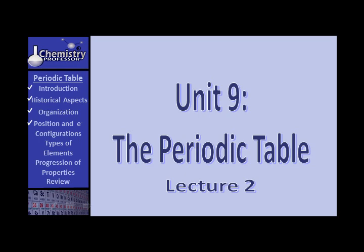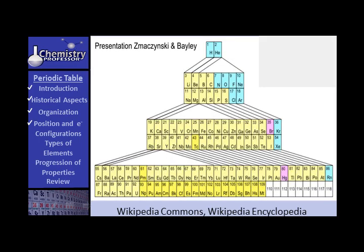Let's look at a couple other interesting periodic tables, and then we will continue our discussion of the table that we use by looking at types of elements. If you go to the World Wide Web and key in alternative periodic tables, you will come up with a variety of tables covering a variety of topics. But in chemistry, you will find these that I'm listing here, plus many others. You will find these under the Wikipedia Commons, the Wikipedia Encyclopedia.